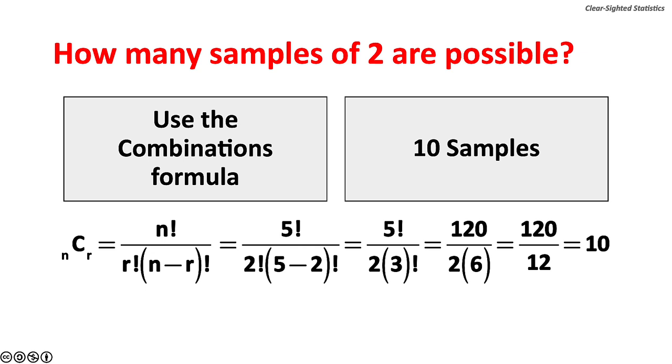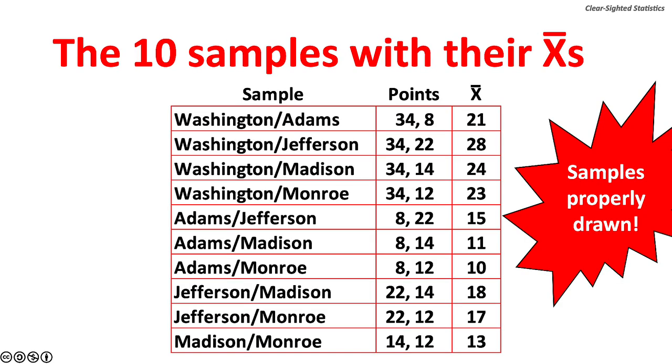The combination formula is used instead of the permutations formula because the order of selection does not matter. Here are the ten properly drawn samples, along with the sample means.